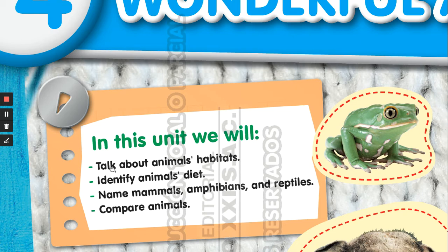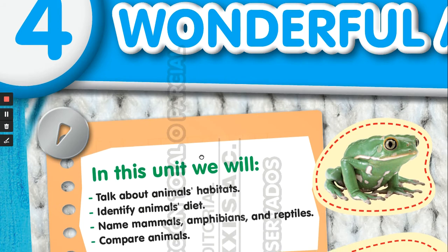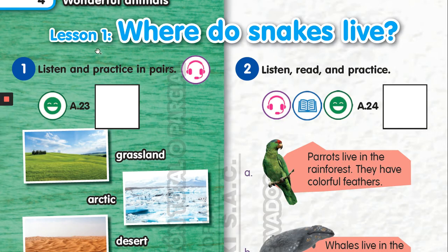For today we are going to talk about this topic: animal habitats. Muy bien chicos, bienvenidos. El título de esta nueva unidad que empieza hoy es 'Animales Maravillosos' y el tema de hoy será hablar sobre los hábitats de los animales, es decir, dónde habitan, dónde viven, dónde crecen. So let's get started — así que empecemos.